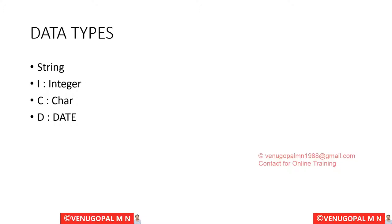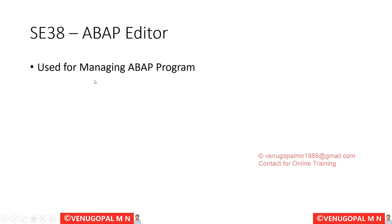Data types define what kind of data a particular variable can store so the compiler or system can manage memory properly. In SAP ECC, similar to BW, there are primitive types like string, integer, character, date, and time. Time is again a derived attribute of character. Let us create a very simple ABAP program to understand how we can create one, then we will start adding and discussing many more logics.